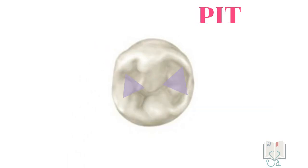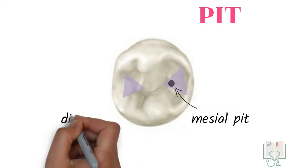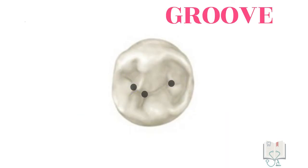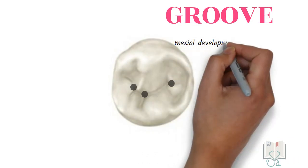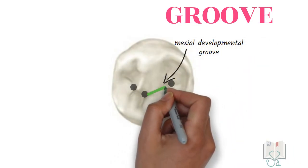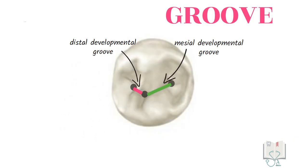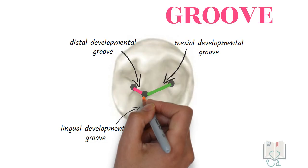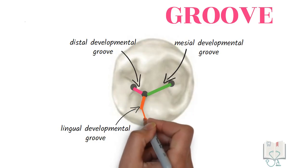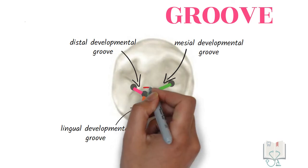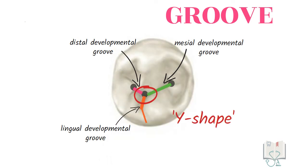There are three pits: the mesial pit in the mesial triangular fossa, the distal pit in the distal triangular fossa, and a central pit located in the center of the occlusal surface. There are three developmental grooves: the mesial developmental groove running between the central pit and mesial pit, the distal developmental groove between the central pit and distal pit, and the lingual developmental groove running from the central pit between the two lingual cusps and ending on the lingual surface. These three grooves converging on the central pit make a Y-shaped pattern, which is characteristic of the mandibular second premolar.